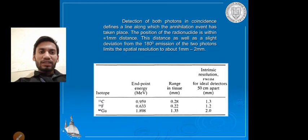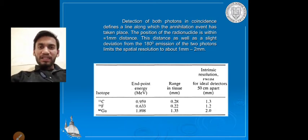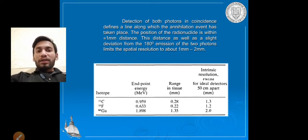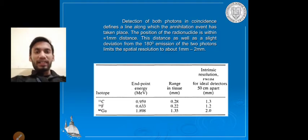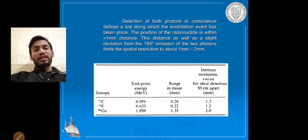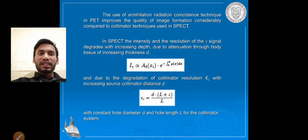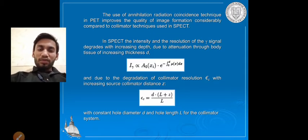For an ideal detector placed 50 cm apart — meaning both detectors are about 1 meter from each other around the body — this distance may vary with tissue strength and thickness. The use of the annihilation radiation coincidence technique in PET improves image quality compared to the collimator technique used in SPECT. PET is therefore more prominent and useful than SPECT.